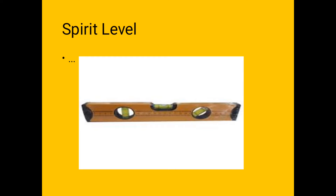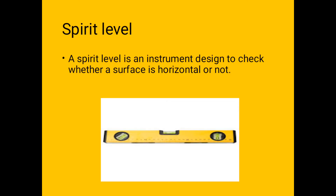A spirit level is an instrument designed to check whether a surface is horizontal or not. For example, if carpenters are making a table, they can use it to see whether the surface is horizontal, vertical, or inclined. These three things we can measure through the spirit level.